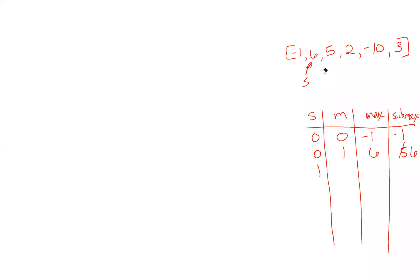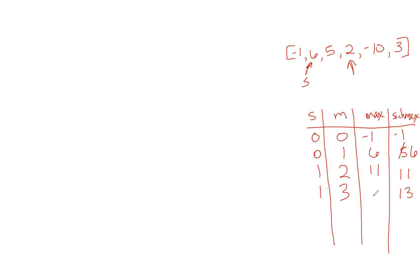We loop through again, start is now one, mid becomes two. Array at m is five, so we add five to six, giving eleven. Is eleven less than array at m? No, so we leave that. Is eleven greater than our current max of six? Yes, so we have a new max. Mid is now three, start is still one. Array at m is two, so eleven plus two is thirteen. Is thirteen greater than eleven? Yes, we have a new max of thirteen.